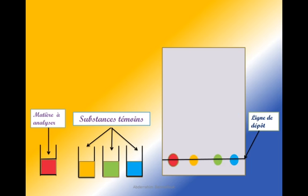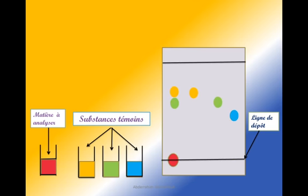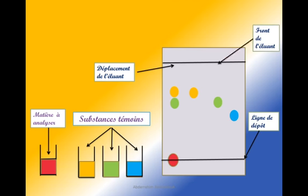On a préparé le papier à l'extérieur, on le met dans le bol, on ferme et on observe. Le trait supérieur indique le niveau de déplacement du solvant — c'est ce qu'on appelle le front de l'éluant.